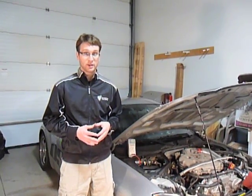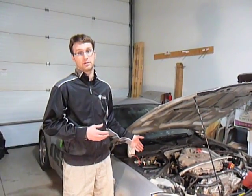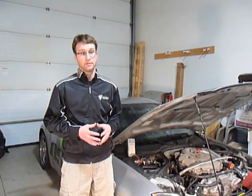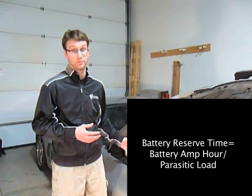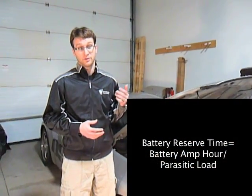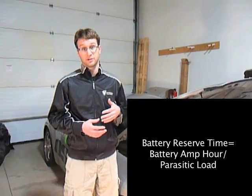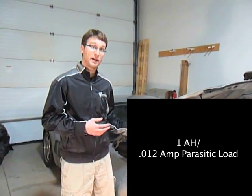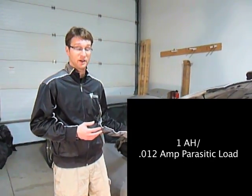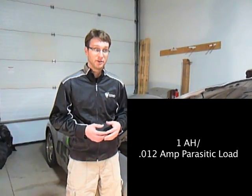After about 20 minutes, it drops to 12 milliamps. So if you want to calculate how long your micro battery — which is a 1 amp hour capacity battery — can be left sitting in the vehicle before you have to start it or recharge it, you take the parasitic load of the vehicle (in this case 12 milliamps) and divide the amp hour capacity by the parasitic load. We have a 1 amp hour capacity battery divided by 0.012 amps, and you get about 80 hours.